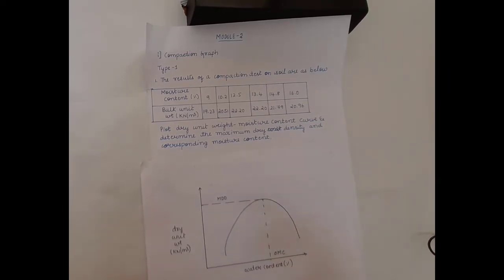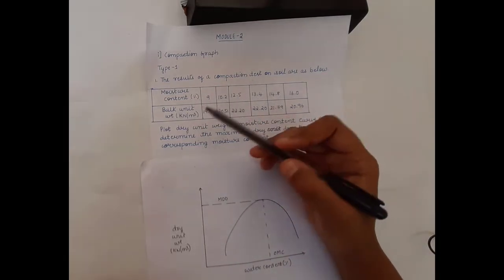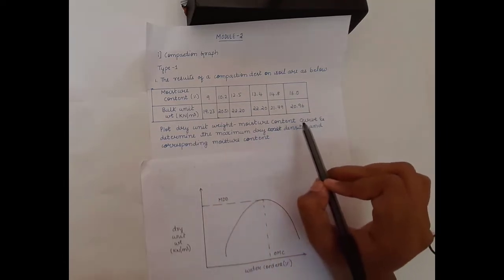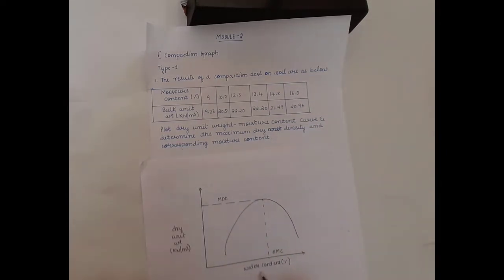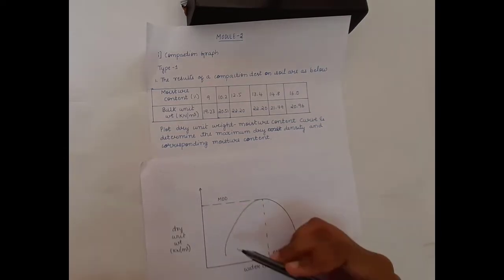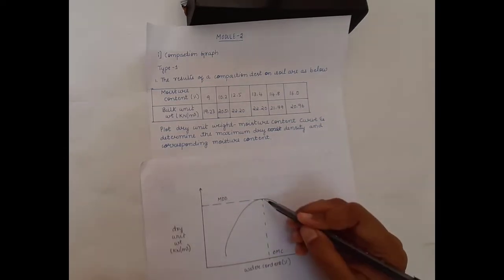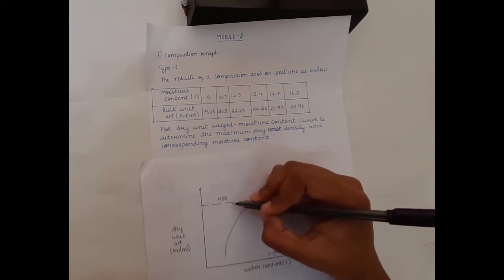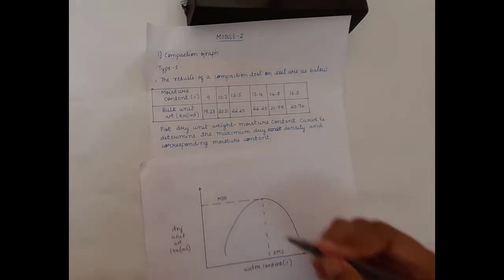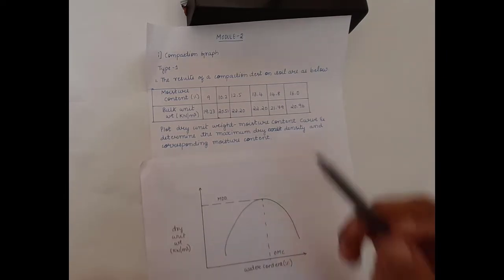Before starting with the calculation part, we need to analyze what is required. They have given us the moisture content and the bulk unit weight and asked us to plot the graph. When plotting the graph, the x-axis will be water content and the y-axis will be dry unit weight. They have given bulk unit weight, but you need to calculate the dry unit weight. When plotting the compaction curve, plot the points, then from the highest point of the curve draw a horizontal line and then a vertical line to get maximum dry density and the optimum moisture content.